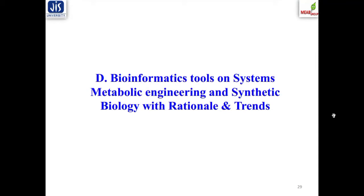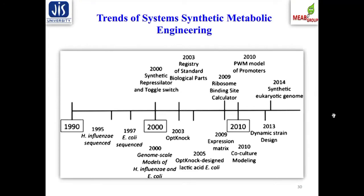The fourth important segment covers bioinformatics tools that control systems metabolic engineering, enabling metabolic pathway reconstruction and identification of highly potential non-natural enzymes — those not naturally functional but improvised to accelerate product generation. This basic chronology and trend of systems and metabolic engineering shows how the trend has been shifting. It started in the 1990s.